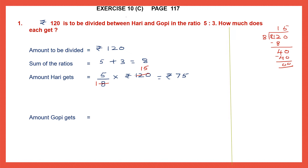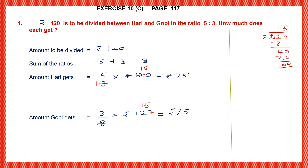Now let's see the amount Gopi gets. Take the second term of the ratio which is 3, divided by the sum of the ratios, multiplied by the amount which is 120. Cancel 8 and 120 — 8 fifteens are 120. Multiply the numerators: 15 threes are 45. The amount that Gopi gets is 45 rupees. You can check your answer by adding 75 rupees and 45 rupees.